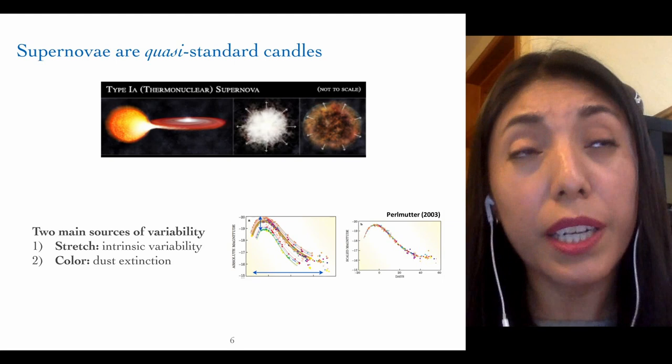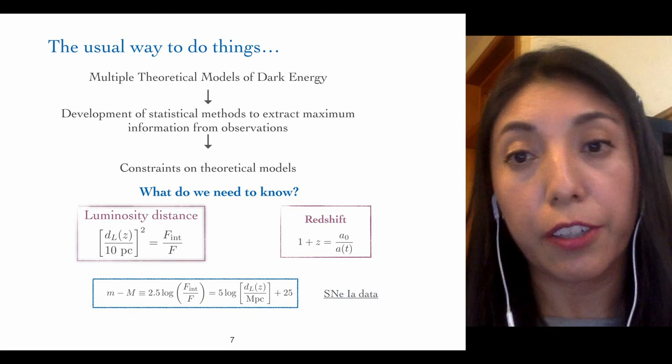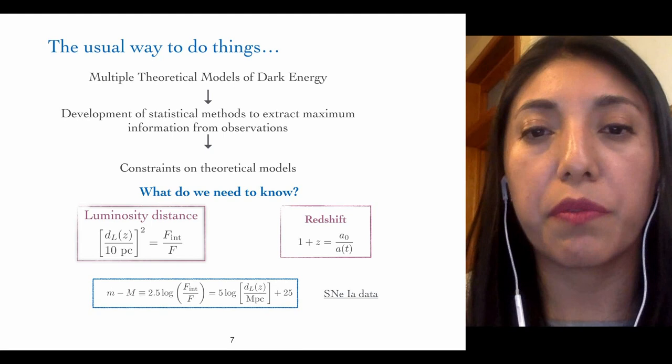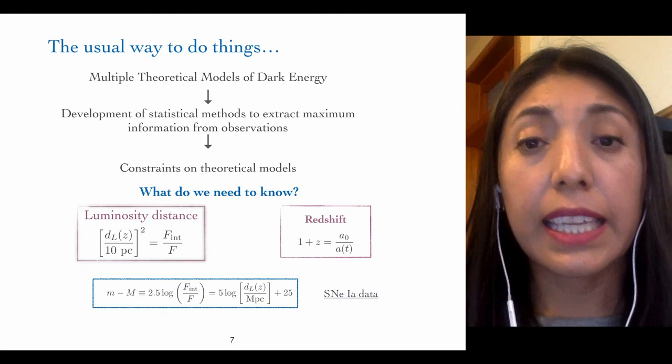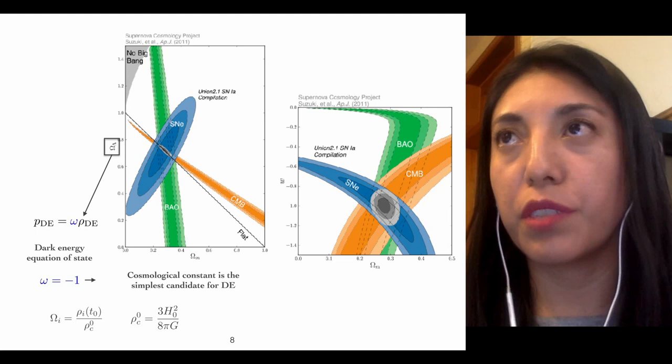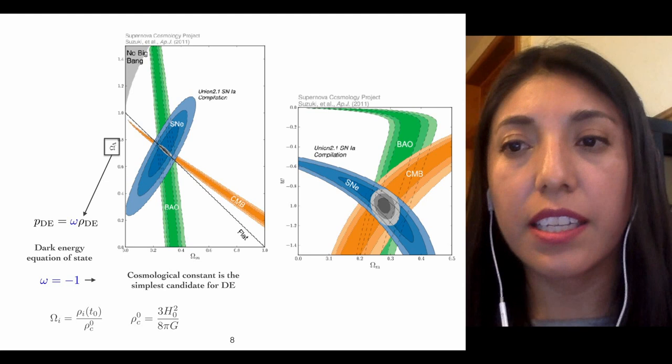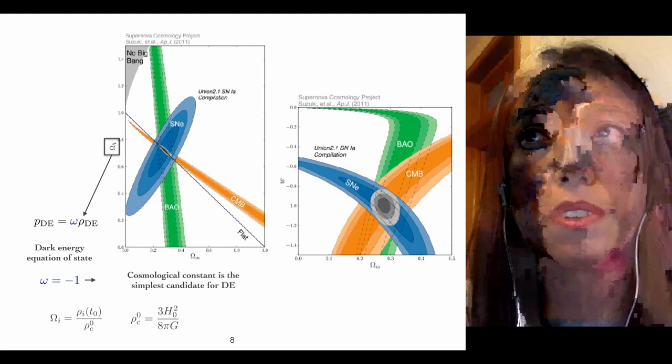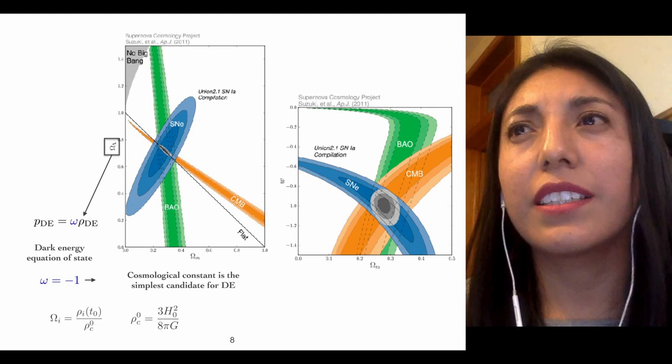In order to know the best values for cosmological parameters, we have to use Bayesian statistics to extract the maximum information from the observations. From the observational point of view, it's necessary to know the luminosity distance as well as the redshift, as in the case of supernovae data. In general, when we are in a position to infer the amount of dark energy and dark matter with different datasets — for instance, supernovae, BAO data, and also the CMB — this is a very old result from 2011, but the dataset can be used to infer the amount of dark energy in our universe.